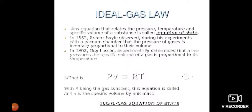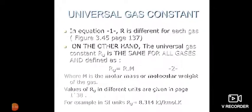Now, universal gas constant: in the previous equation, R is different for each gas. On the other hand, the universal gas constant Ru is the same for all gases and is defined as Ru equals R times M, where M is the molar mass or molecular weight of the gas.